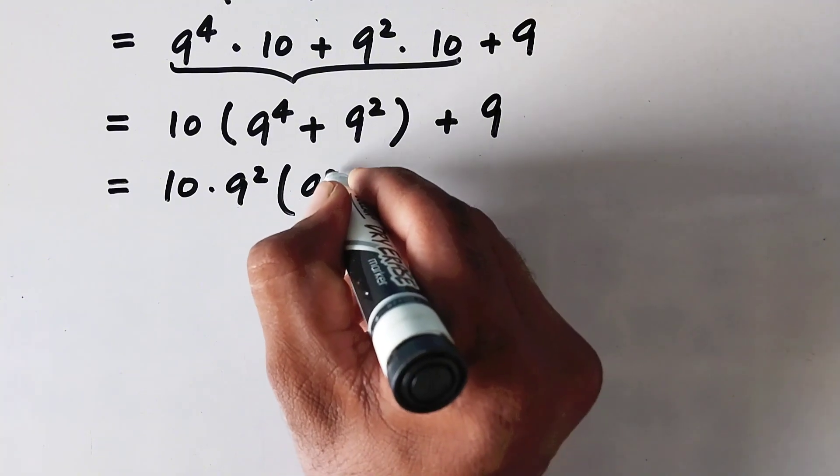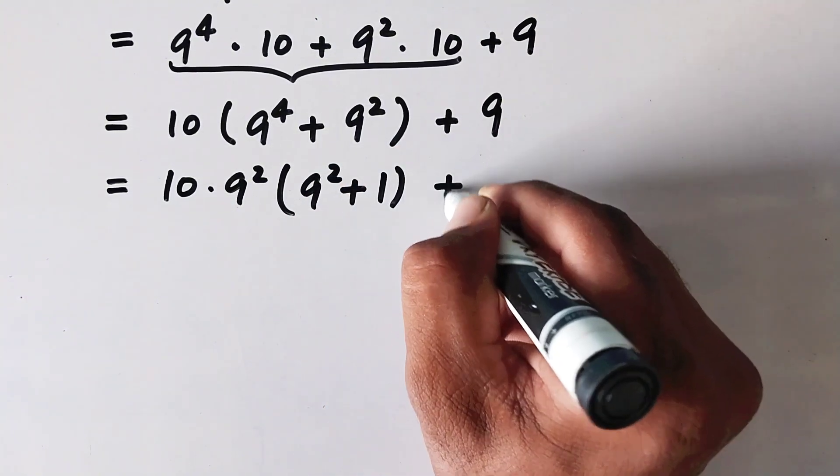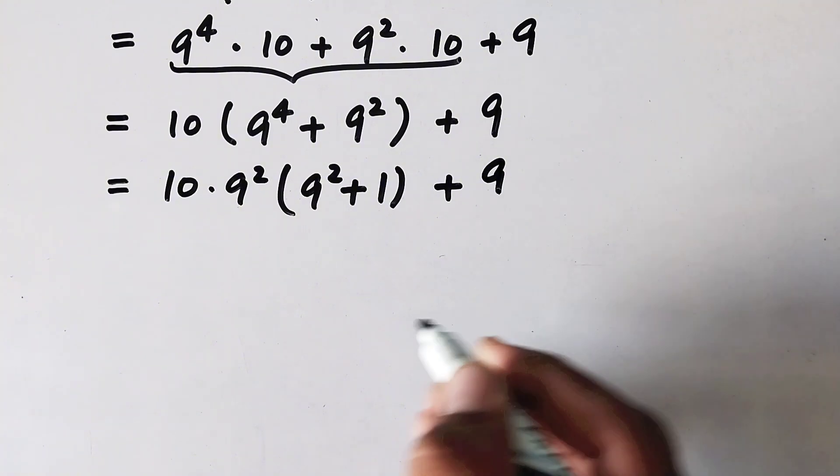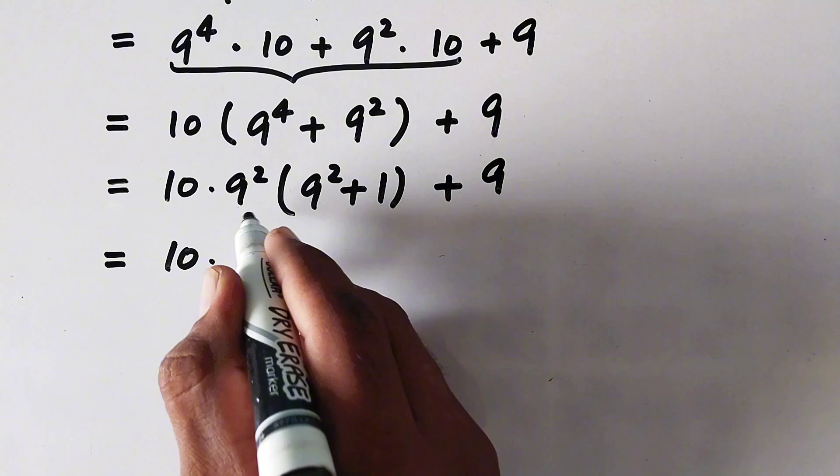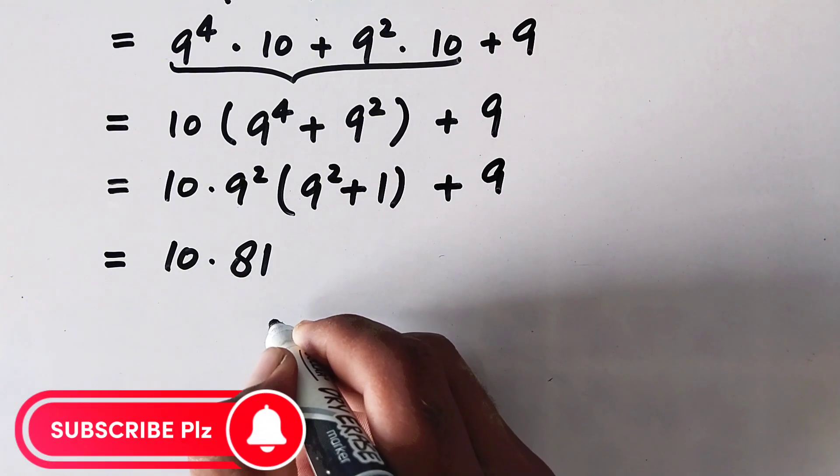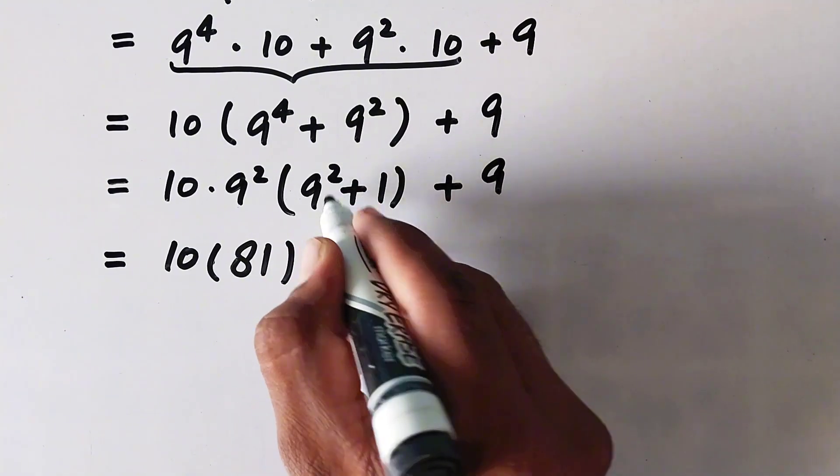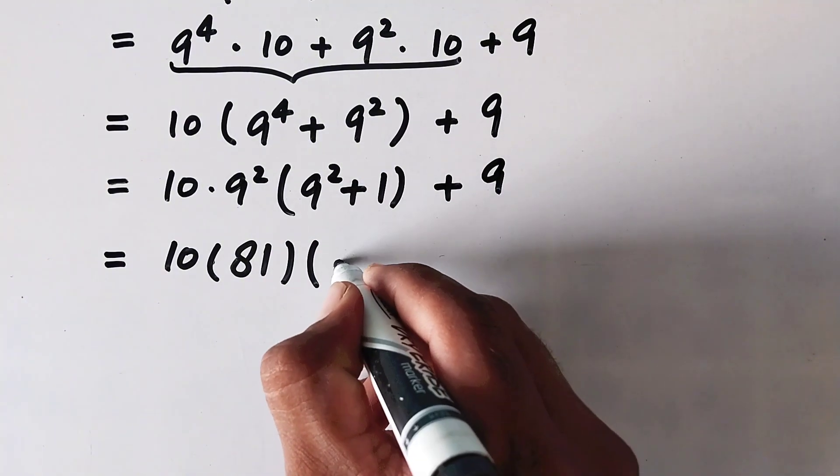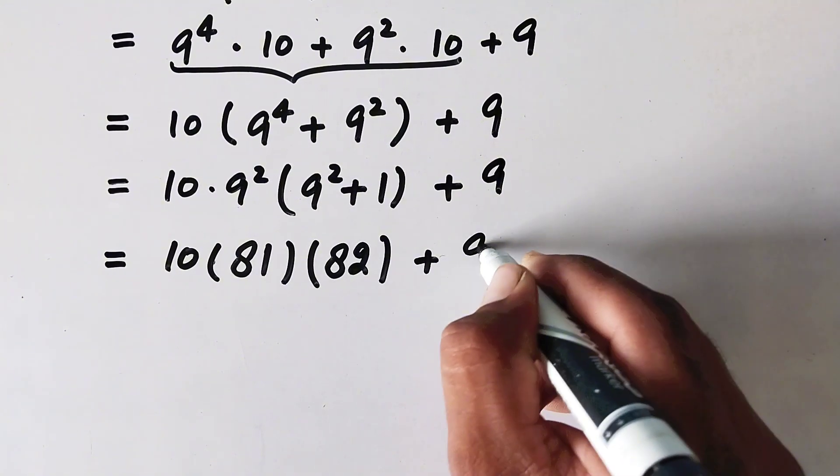So here left will be 9 square plus 1 plus 9. Now 10 times 9 square, 9 square is equal to 81, then 9 square is 81 plus 1 equals 82 plus 9.